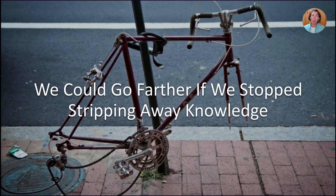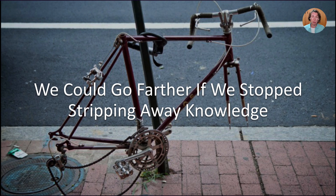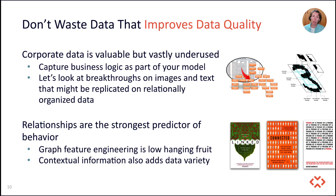You might say there are just a couple of items, not a big deal. But think about what we're trying to do in machine learning — we are trying to represent a model of a system of our world and then make predictions about it. If you start taking away components, you just can't get as far. If you have a very shallow model that doesn't fully represent your system, your predictions aren't going to be as rich. So the first thing is: don't waste data that can improve the quality of what you're putting into your machine learning. Corporate data is really valuable — we have tons of it, but we don't use it very well in machine learning. We need to figure out how to capture business logic as part of our models.